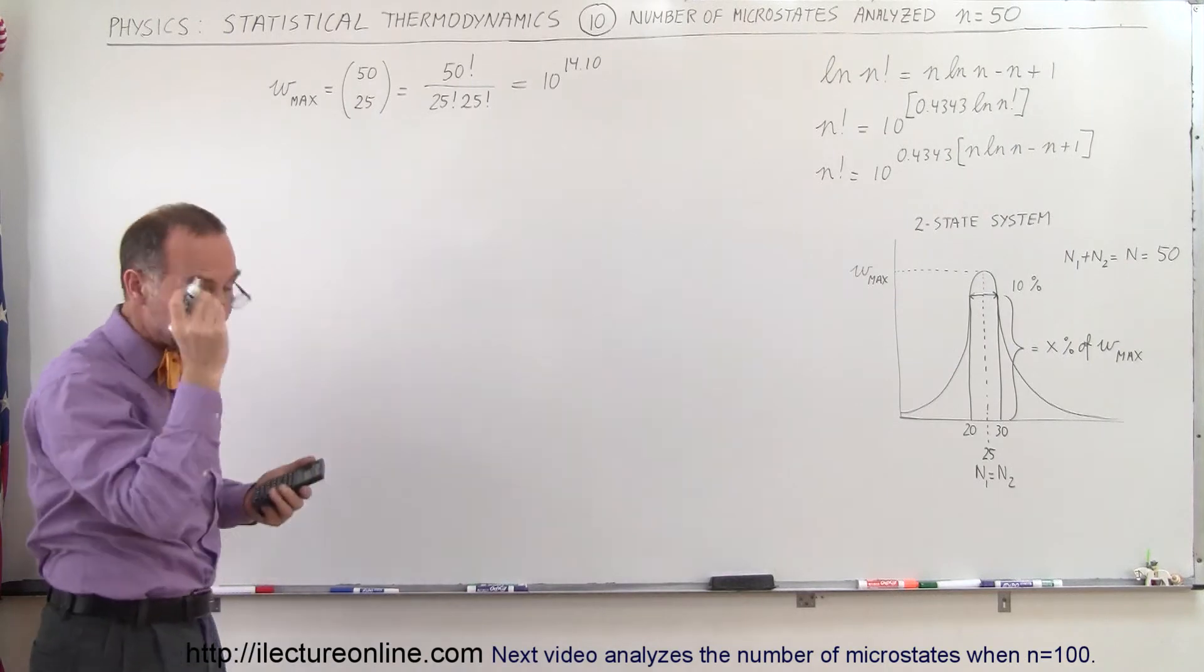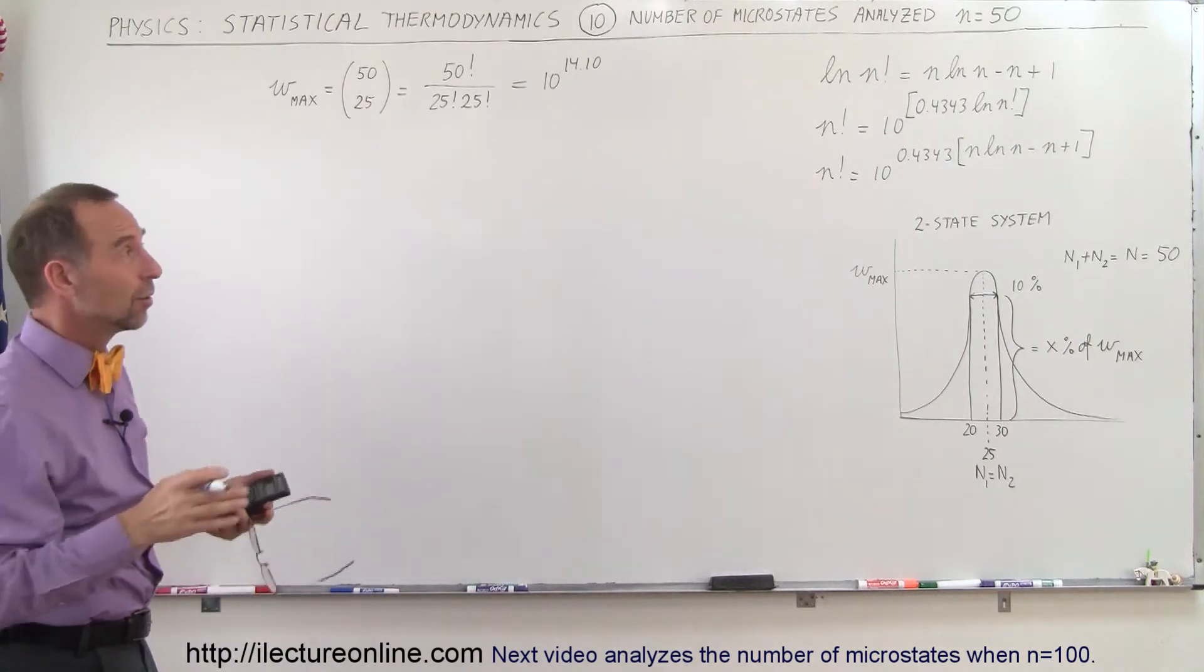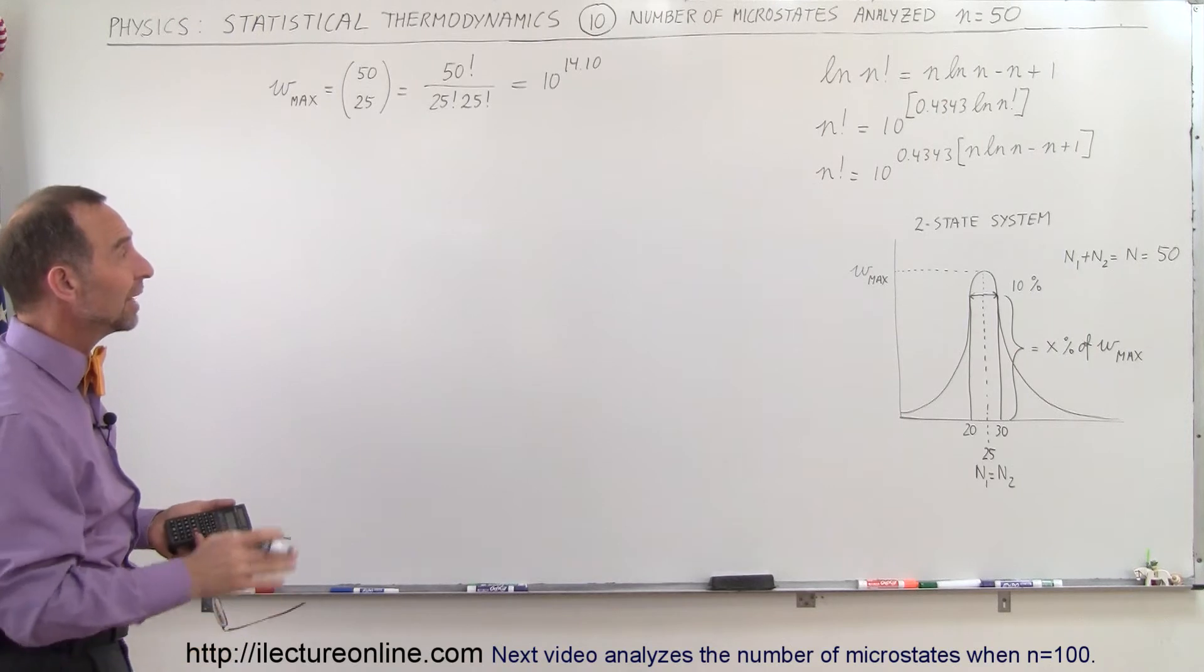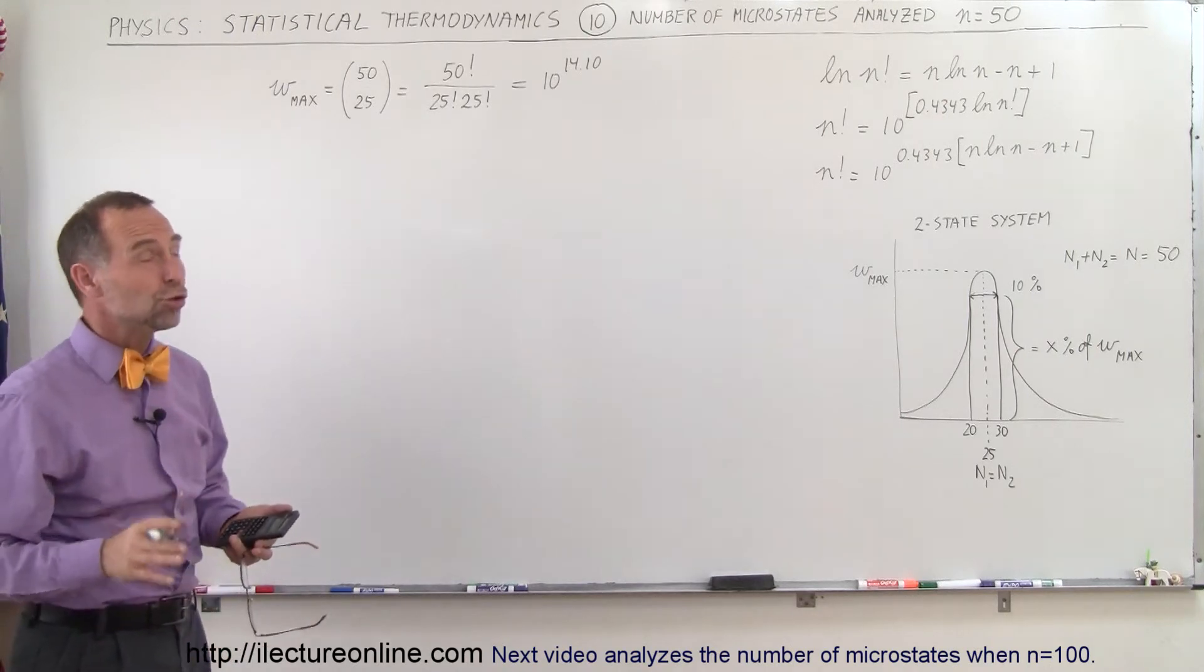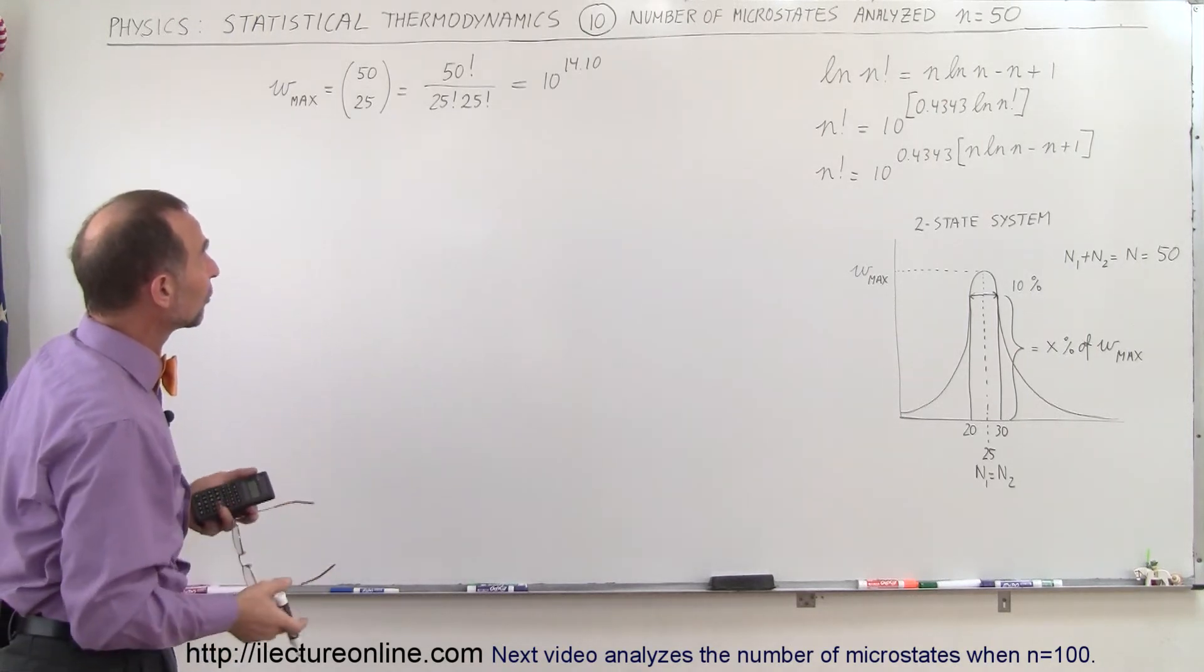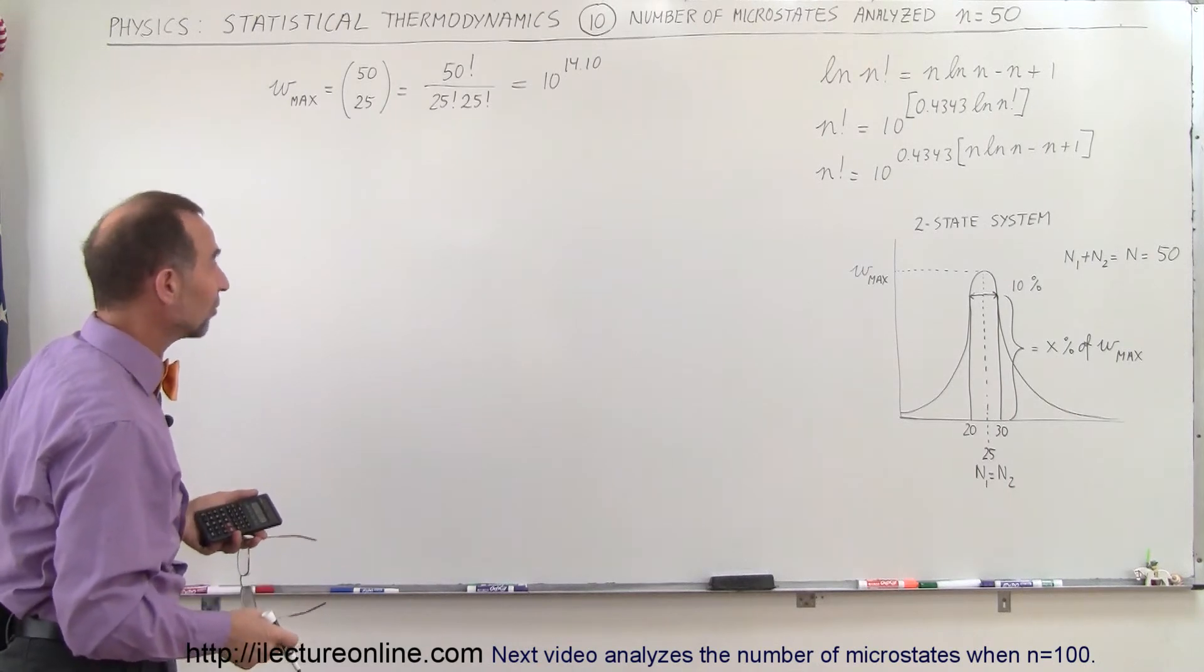So this is equal to 10 raised to the 14.10 power. All right, so that's the maximum number of microstates in a population of 50 items in a two-state system. That's a huge number, of course, that's already in terms of over a hundred trillion different microstates.